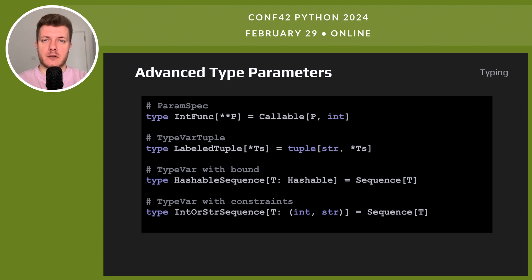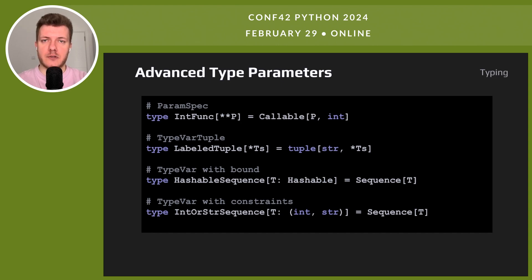PEP 695 marks a big step forward for Python's type system. It now supports TypeVarTuple and ParamSpec directly in type aliases. This means we can define more complex types — for example, a type for functions returning integers, or a tuple type that starts with a string followed by any number of elements. We can also restrict sequence elements to be hashable, or define sequences that only contain integers or strings. This update simplifies the creation of generic types, making our code more expressive and easier to understand, and allows us to write more robust and type-safe Python code.